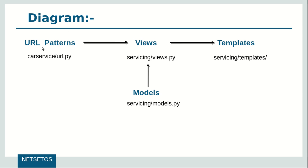The four pieces to understand are URL Patterns, Views, Models, and Templates. Each of these has a separate role. In this section, we will discuss the relationship of each of these pieces with some examples. During this course, we will look more closely at each one individually.